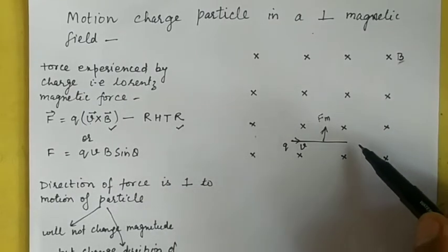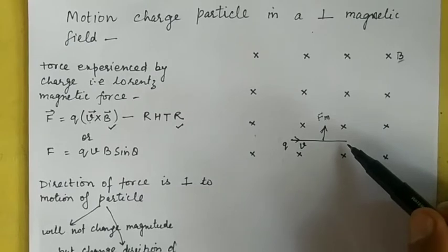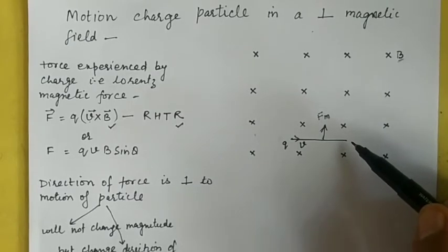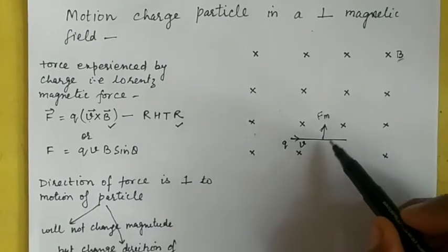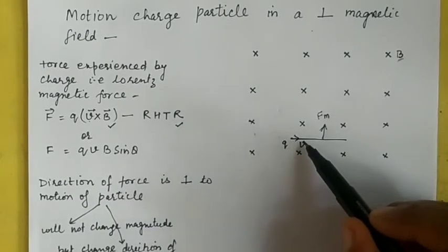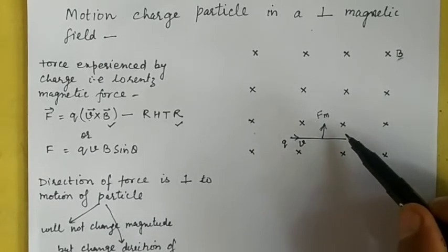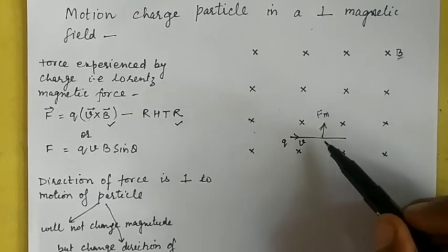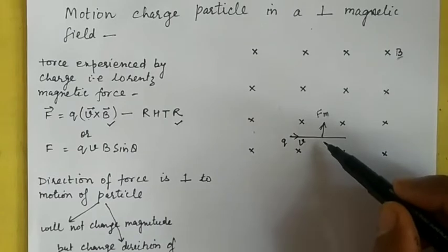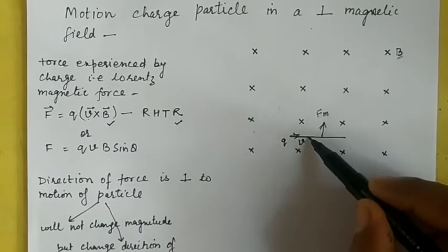Because this force acts perpendicular to the motion of the body, it cannot change the magnitude of the velocity — it can only change the direction. For example, if the particle was moving at 10 m/s, it will keep moving at 10 m/s. There is only a change in direction, which is toward the magnetic force, so the motion of the charged particle curves accordingly.